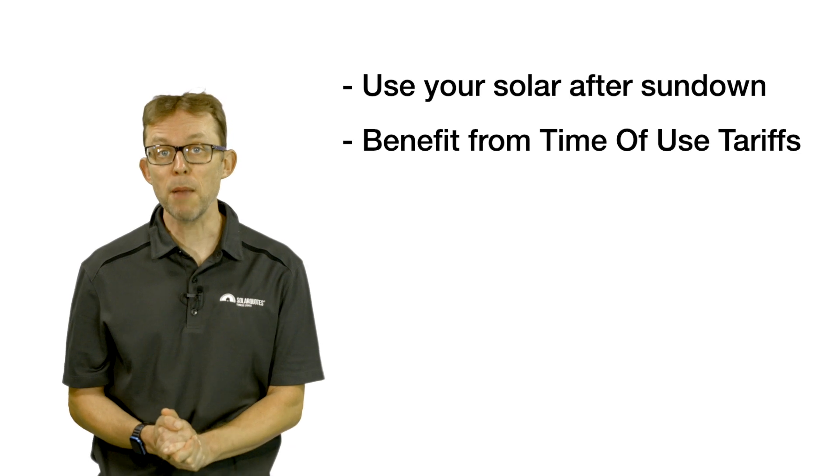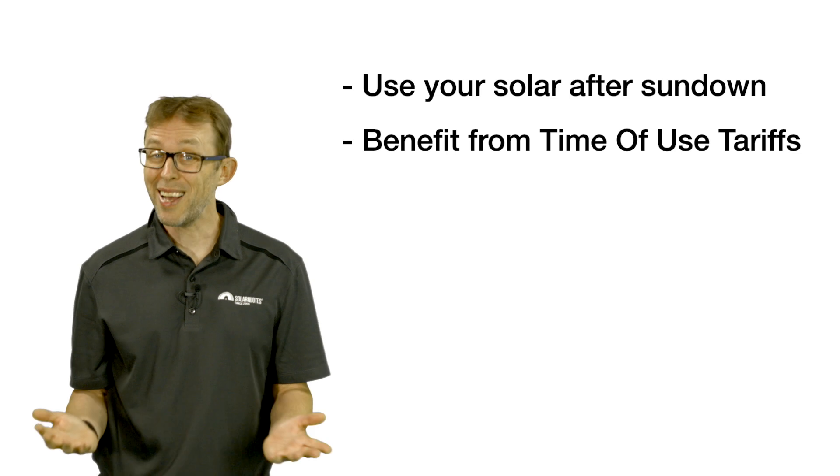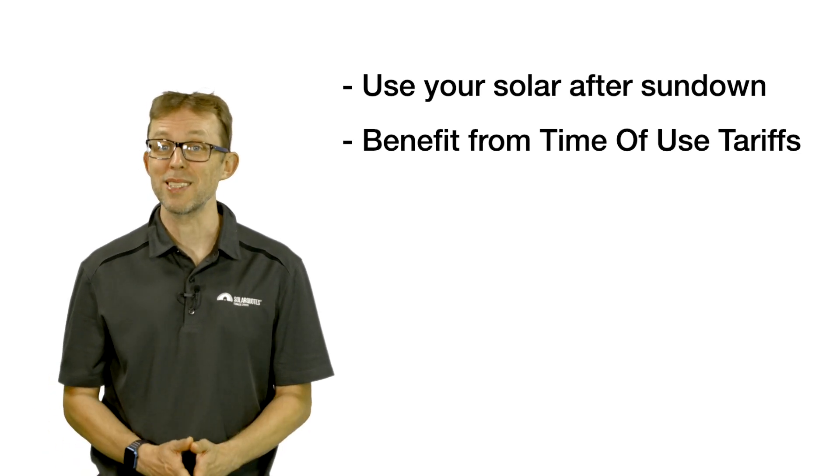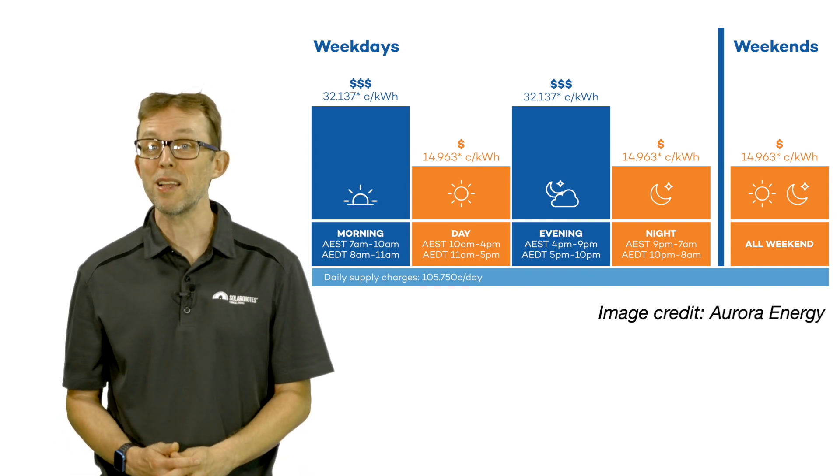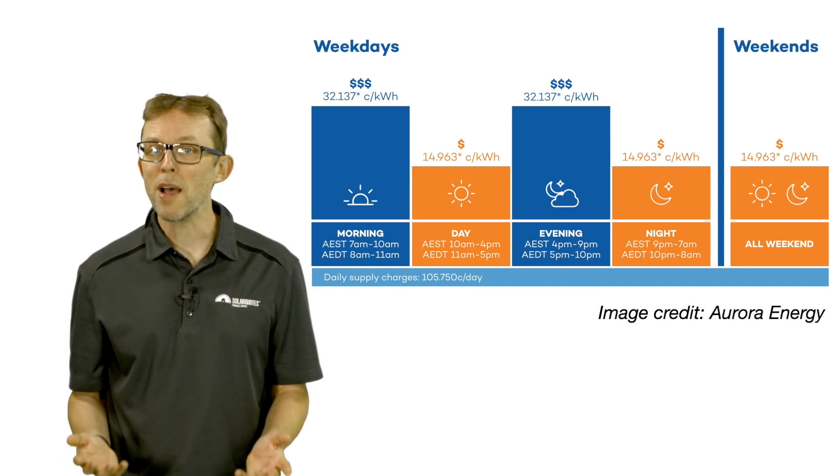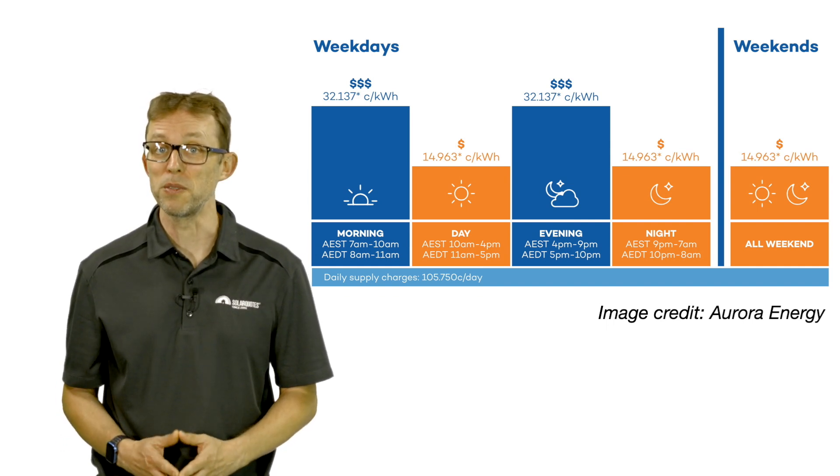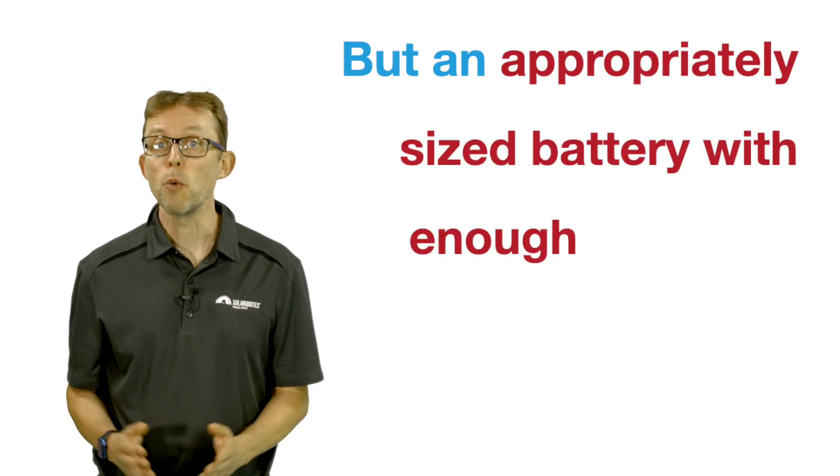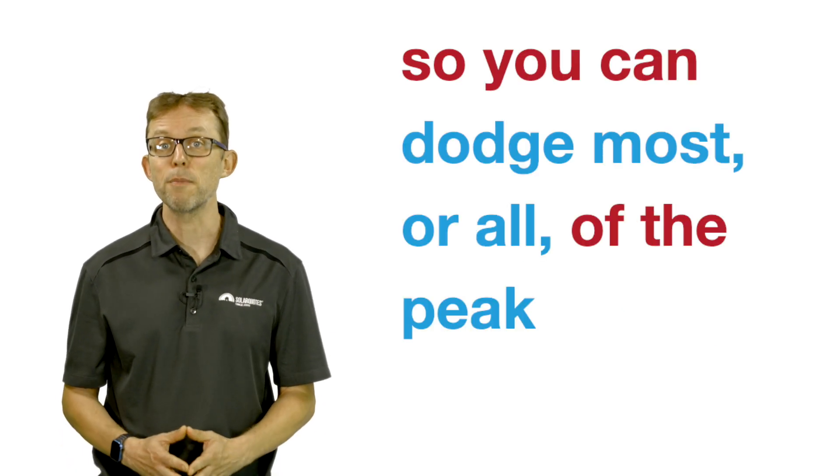Reason two, to benefit from time of use electricity tariffs. Time of use tariffs are becoming more popular and may even become mandatory at some point. These tariffs slug you with high per kilowatt hour charges during the late afternoon and evening, for example between 5 and 9 pm, when demand on the electricity grid peaks. If you don't have a battery, time of use tariffs are likely to substantially increase your bills. But an appropriately sized battery with enough solar can power you through these peak periods, so you can dodge most or all of the peak pricing period. You then benefit from off-peak pricing later at night if your battery runs out before sunrise.